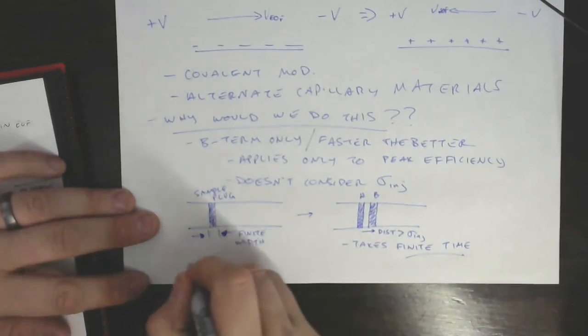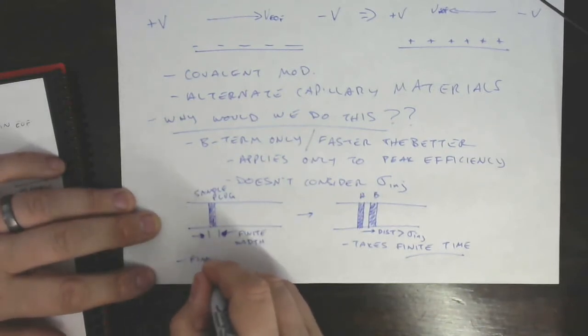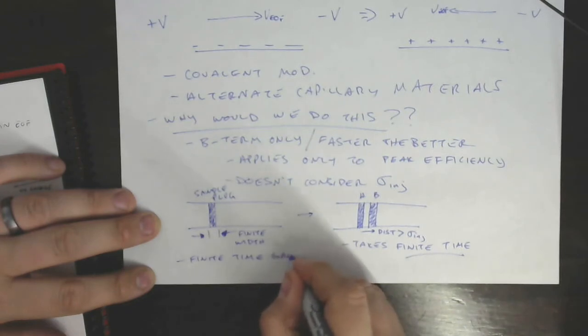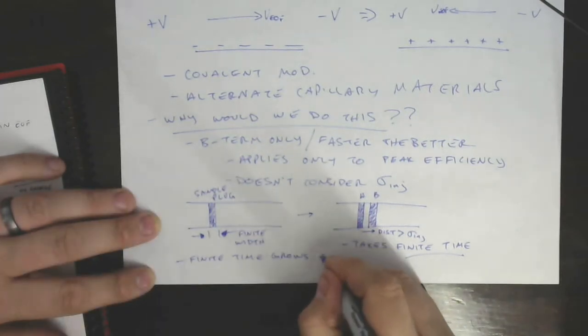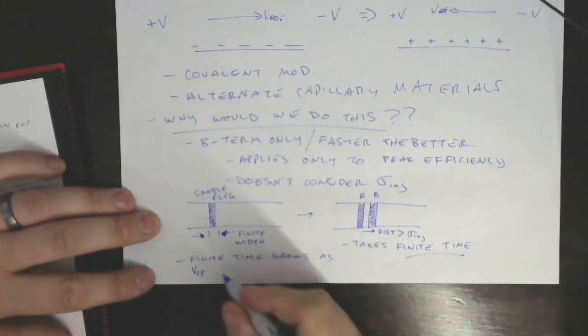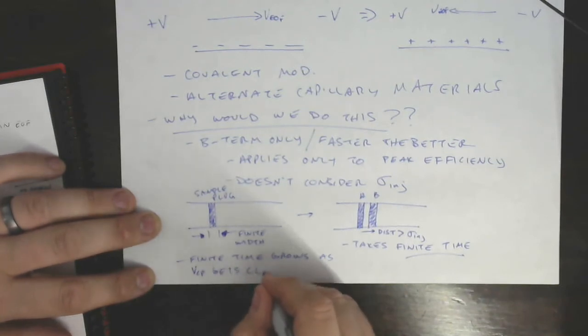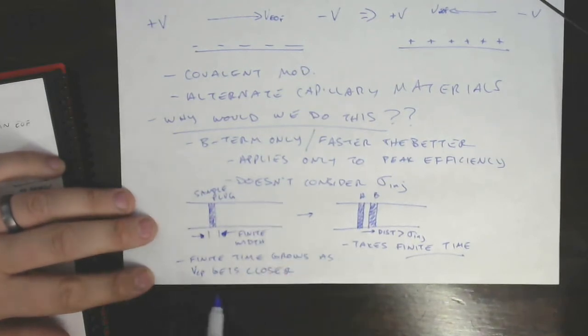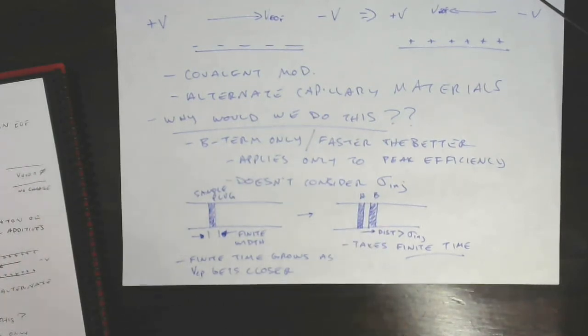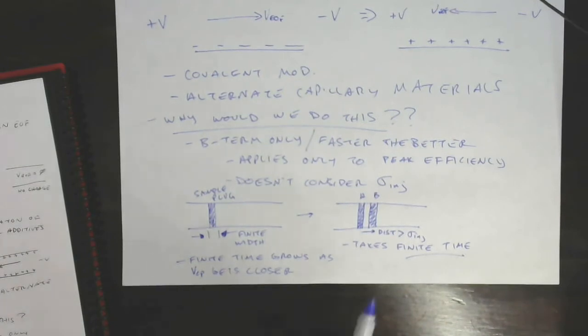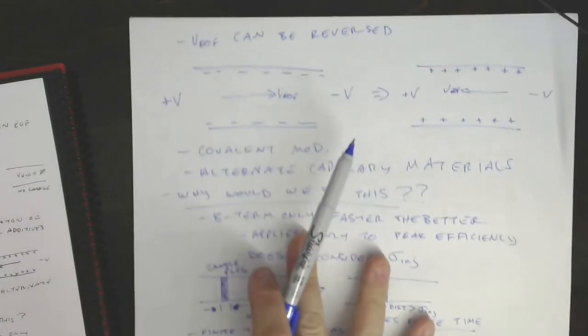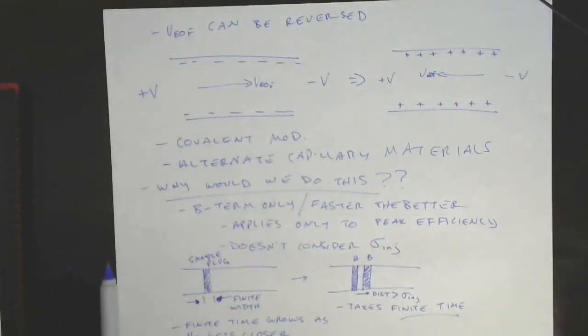In fact, that finite time is the last thing we'll say today. That finite time grows, gets larger as the electrophoretic velocity of these things gets closer, right? As they become more and more similar in electrophoretic velocity, it takes longer and longer and longer to be able to get them that distance apart. That's a great argument for taking down the velocity of electroosmotic flow to lengthen the time of the separation.